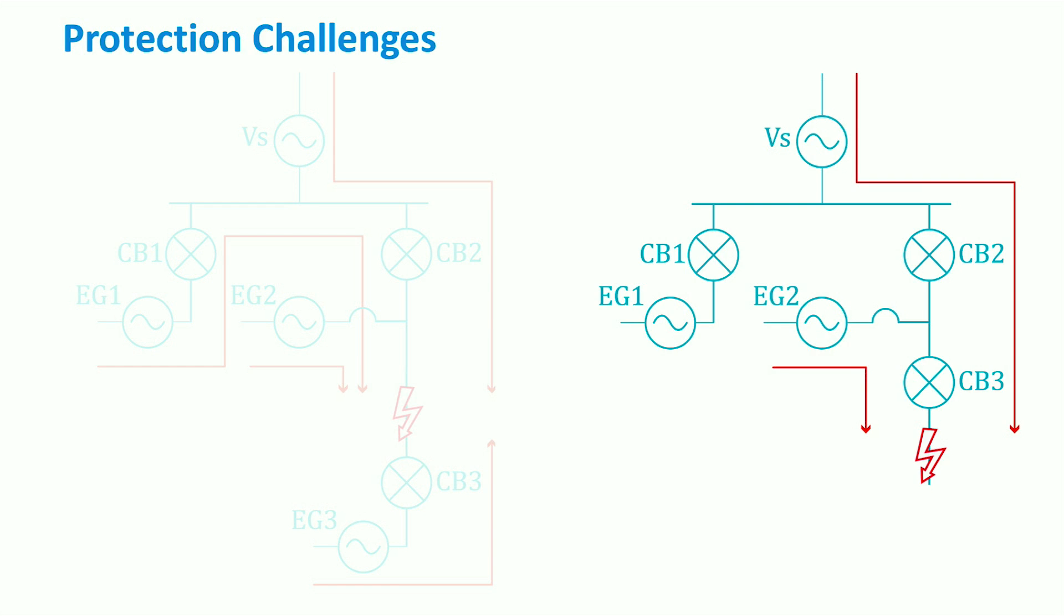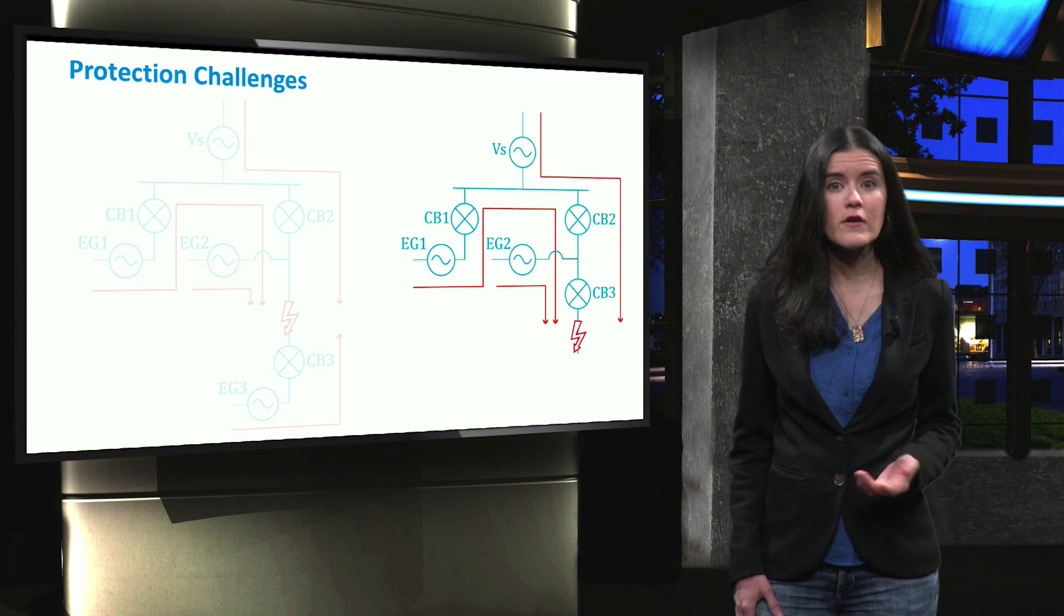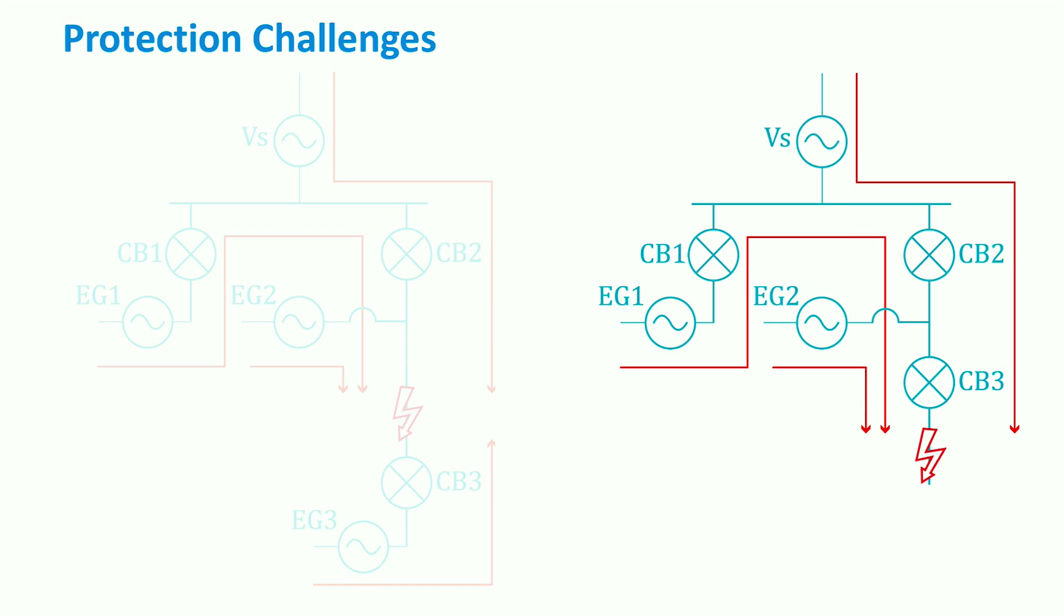As we can see in the figure, the fault current in CB3 is supplemented by the current from EEG 1 feeder, leading to the possibility of disconnection of that feeder if CB1 trips.